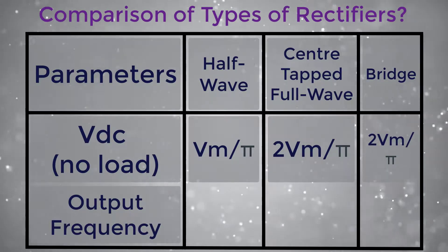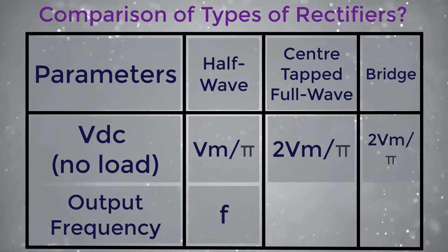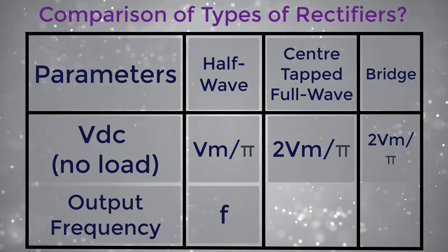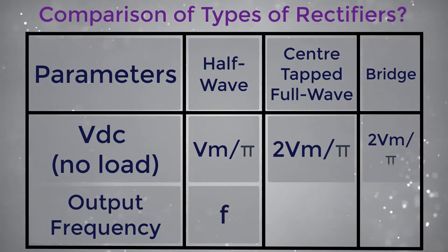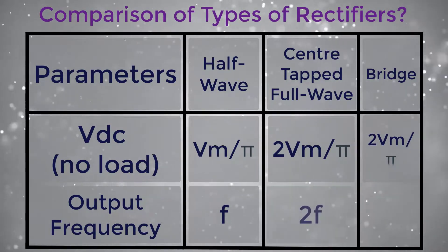Output frequency: for half wave it is F, whereas for center tapped full wave and bridge it is 2F.